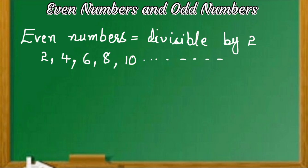For example, 242, 84, 6, and 96. In these numbers, you can see the unit digit is an even number. That means the whole number is an even number.